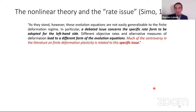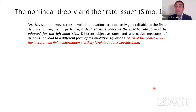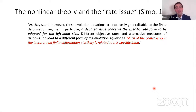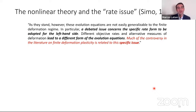Note that Simó was working on this problem years before Crisfield and Govindjee published the viscoelastic model. This is what Simó said in his seminal paper from 1992: 'As they stand, however, this evolution equation, referring to the infinitesimal case, is not easily generalizable to the finite deformation regime. In particular, a debated issue concerns the specific rate form to be adopted for the left-hand side. Different objective rates and alternative measures of deformation lead to a different form of the evolution. So much of the controversy in the literature on finite deformation plasticity is related to this specific issue.'